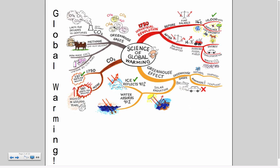Here we have a branch thinking map or graphic organizer of the science behind global warming. We have the Industrial Revolution, greenhouse effects, CO2, and greenhouse gases. The greenhouse gases and greenhouse effects are directly linked — the more gases you have, the more the effect is seen.